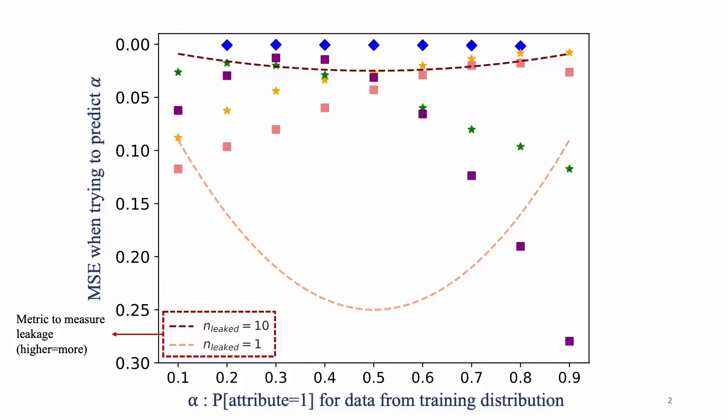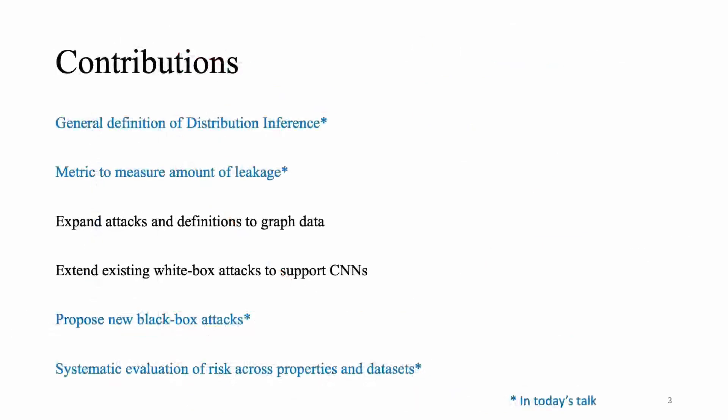As part of our work we propose a general definition for distribution inference that allows us to come up with a metric that helps measure the amount of leakage in these cases. We also propose two new black box attacks and perform systematic evaluation of risk across different properties and data sets, and that's what I'll be focusing on in today's talk.